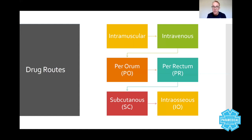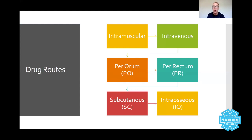Intraosseous, or into the bone, is a route available for administering drugs that would otherwise be given intravenously. The rate of absorption for intraosseous infusion is equivalent to intravenous infusion, so it's a very good route. Historically paramedics never had this in their scope of practice. Today, intensive care paramedics tend to use it in conscious patients, but administering something through the IO route is extremely painful for the patient.